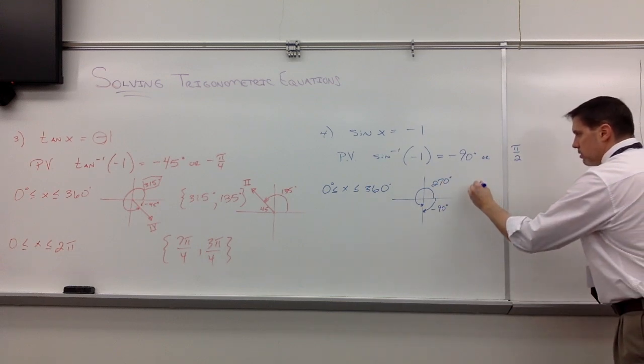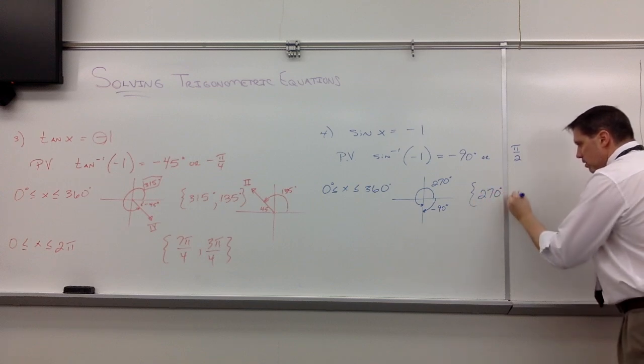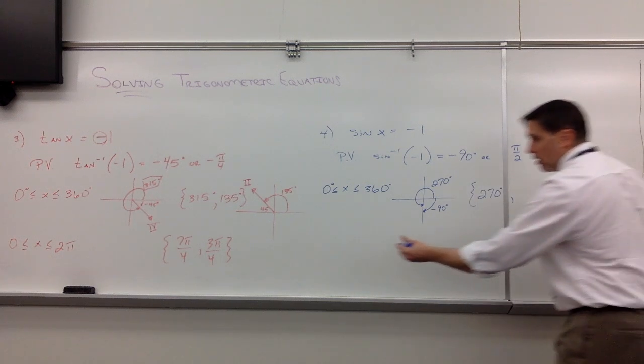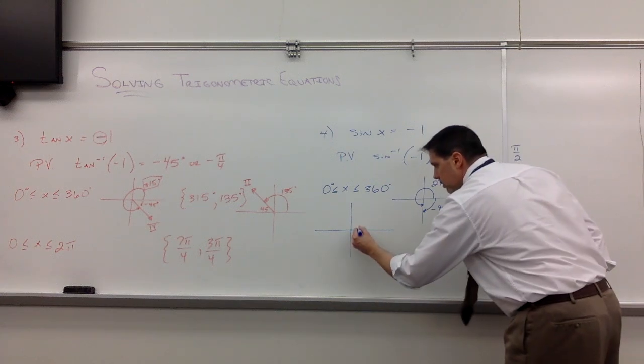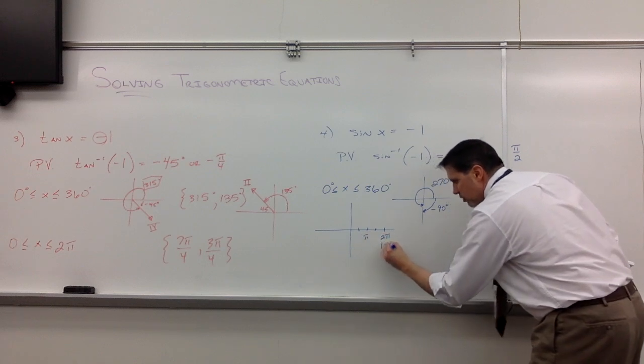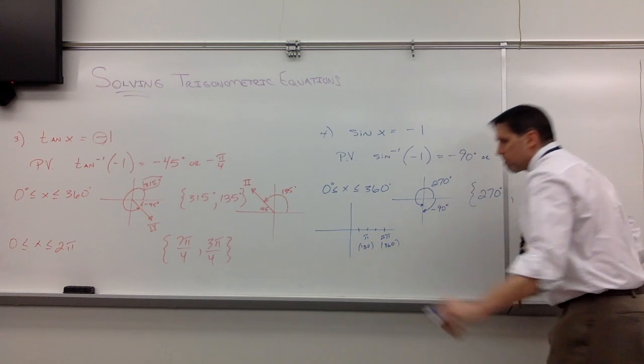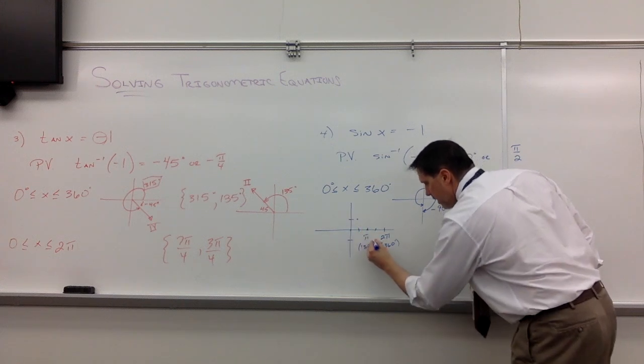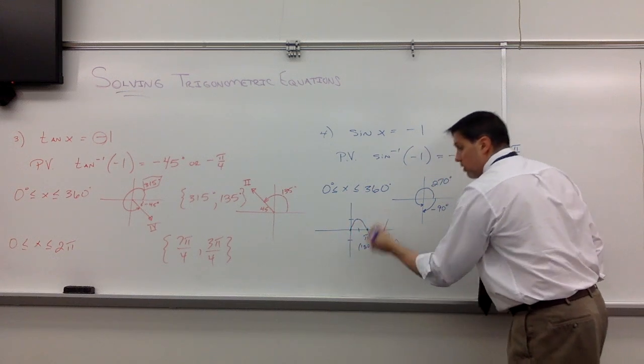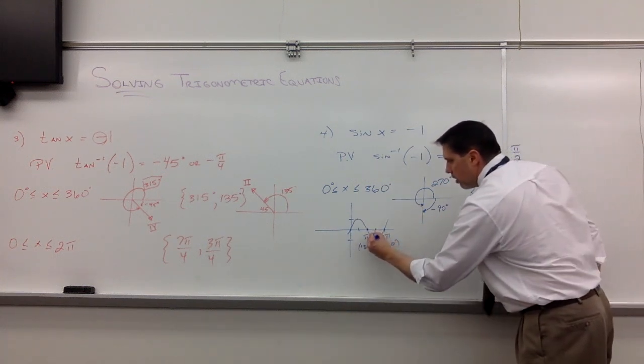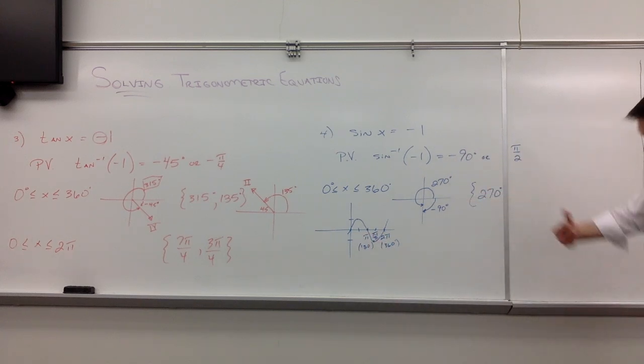So 270 degrees is definitely a solution here. Question is, are there others? There are other places where sine is equal to negative 1. And as it turns out, there are not from 0 to 360. We can go back to our graph for sine. That's 360 right there. That's 180. Where is sine negative 1 at? Well, if you draw the graph for sine, you'll find out that it's negative 1 at one location, one location only from 0 to 360. Right there at, well, we call that 3π/2, otherwise known as 270. So there is but one solution.